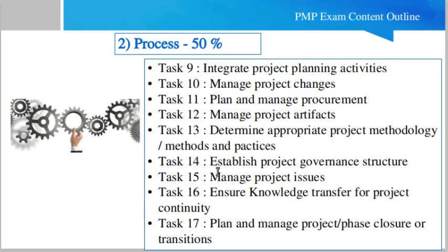Task 13: determine the appropriate project management methodology — whether waterfall, agile, or a hybrid approach. Task 14: establish the project governance structure. Task 15: manage project issues and define your approach for handling them. Task 16: ensure knowledge transfer for project continuity — for example, if a team member is resigning, make sure their knowledge is properly transferred to another person.